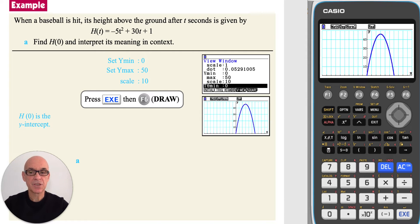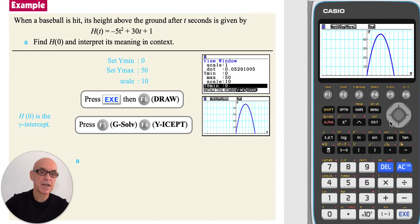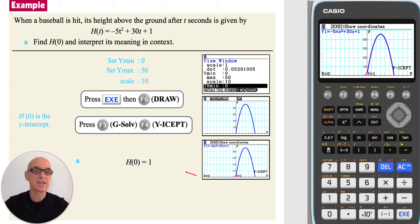As h of 0 is the y-intercept of the graph, press f5 for g-solve, and then f4 for y-intercept. We see that h of 0 is equal to 1, as before. At this point, it's probably a good idea to make a simple, neat sketch of the graph as part of your method.